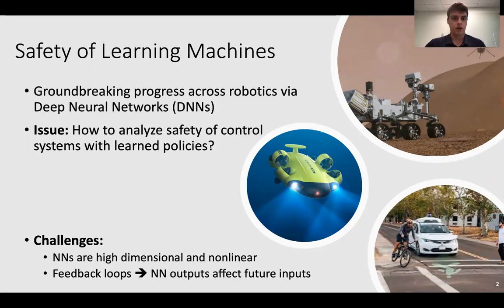There's a lot of exciting progress going on across robotics, particularly using learning and machine learning to come up with groundbreaking new results for perception, control, and motion planning. The question is, when we think about bringing some of those advances to systems like autonomous vehicles and drones, a lot of serious questions come up about how we can analyze the safety of these control systems that employ learned policies in the feedback loop.